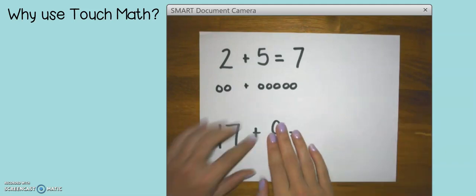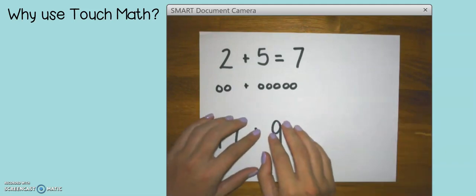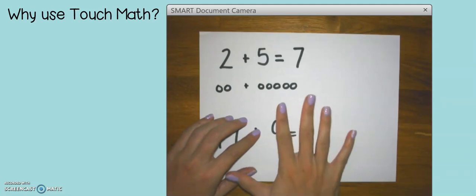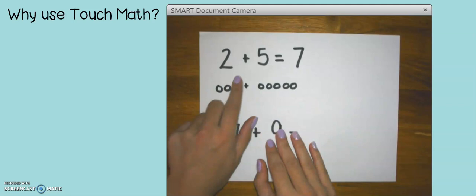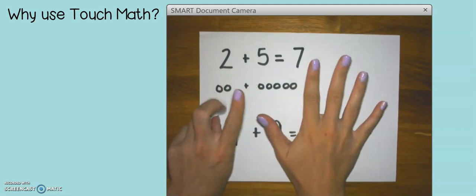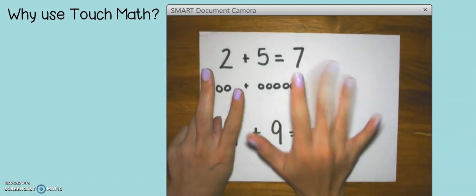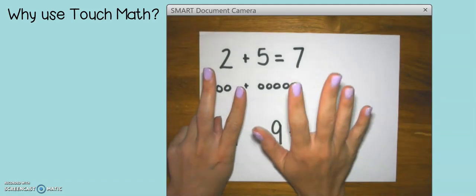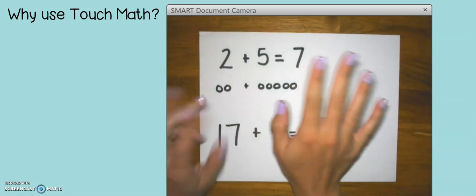Another strategy that students often do is they use their fingers. It is absolutely okay for your student to use their fingers. Let's look at the first problem. Two plus five. One, two, three, four, five, six, seven. We still got seven. That was easy and quick.